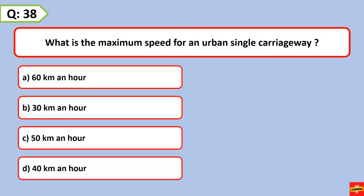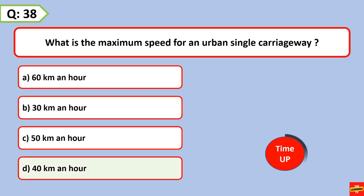What is the maximum speed for an urban single carriageway? 40 km an hour.